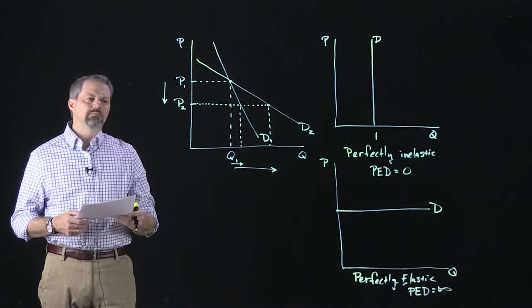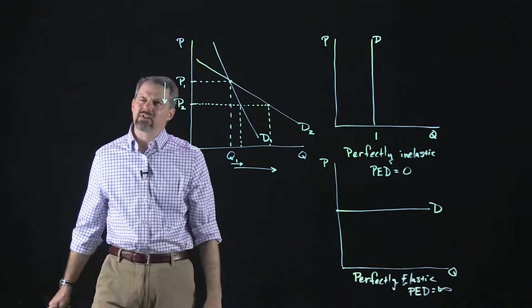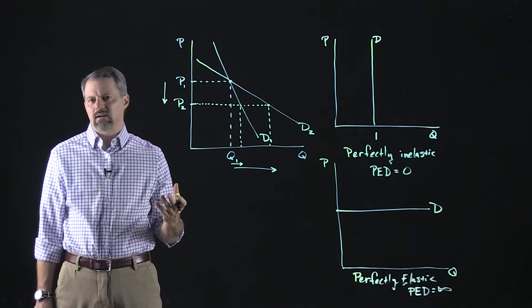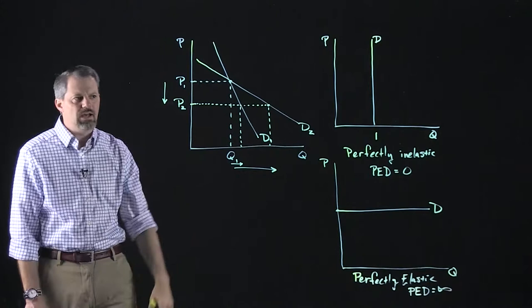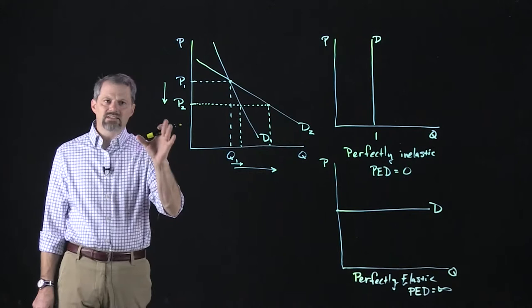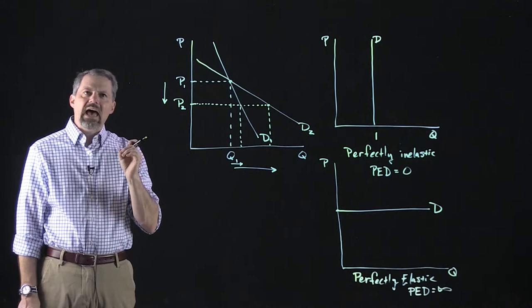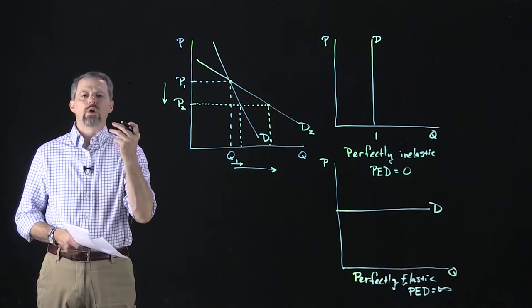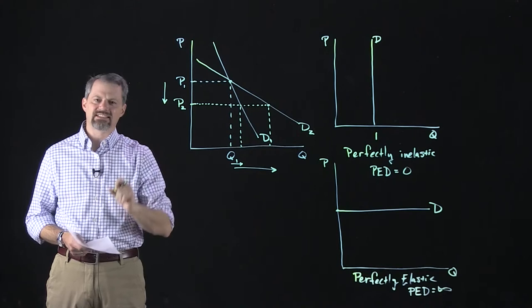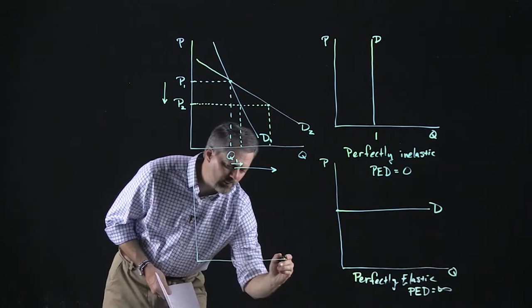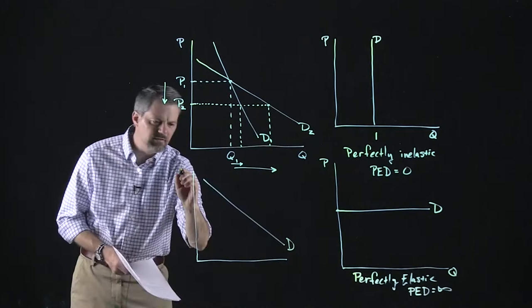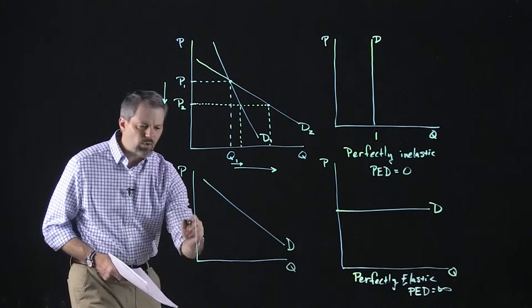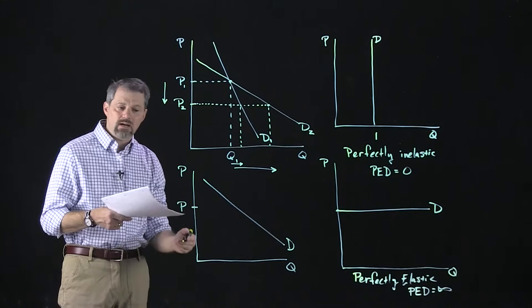Let's talk about why elasticity measures matter. You may be thinking this seems like a way to make a microeconomics class more complicated. The answer is that the elasticity of the demand curve is going to be very important in terms of understanding how firms are helped or hurt by changes in a market. Let's start by looking at the relationship between the revenue that a firm earns — total revenue — and the elasticity of the demand for what it's selling.